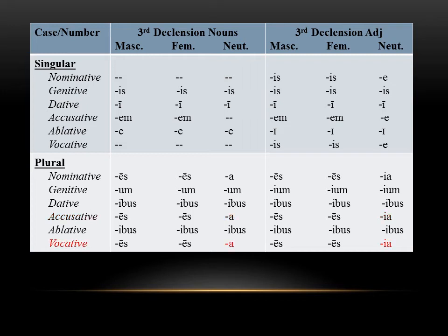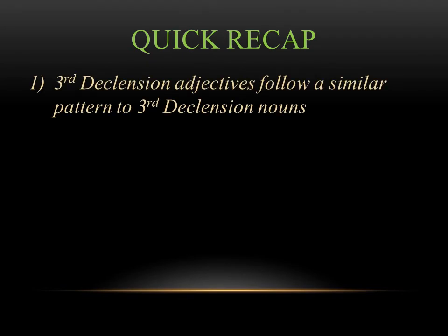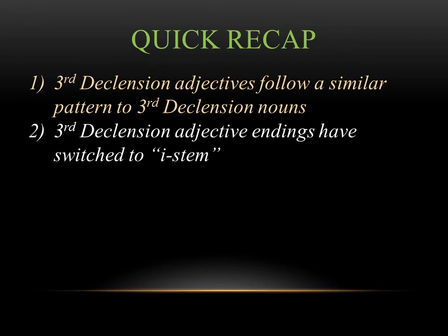The vocative, of course, always follows the same pattern as the nominative. So if in the neuter the nominative plural is IA, it's also going to be that in the vocative. To recap: third declension adjectives follow a similar pattern to third declension nouns, sharing the same endings. The difference is that third declension adjective endings have switched over to I-stem, meaning the letter I has snuck in in a couple of different cases. Make sure you have those places marked in your notes so you can recognize them moving forward.